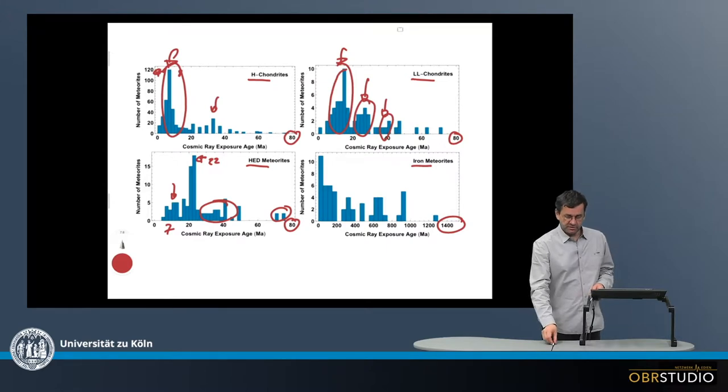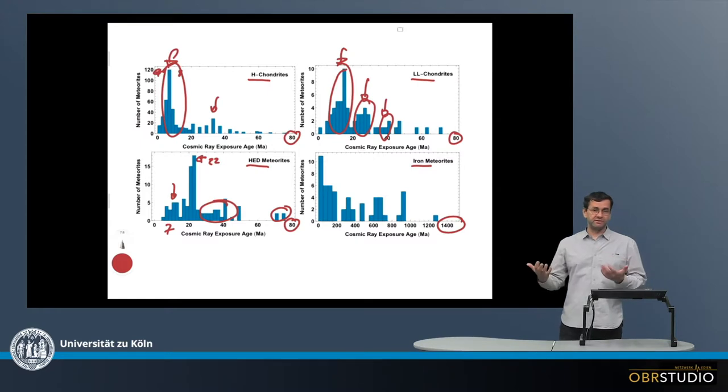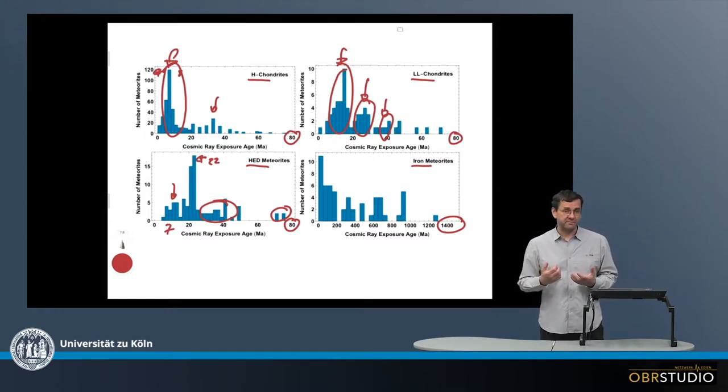This means that when you look at the meteorites, it's not that all the H chondrites or all the LL chondrites come from various parent bodies, but they might come from the same parent body.